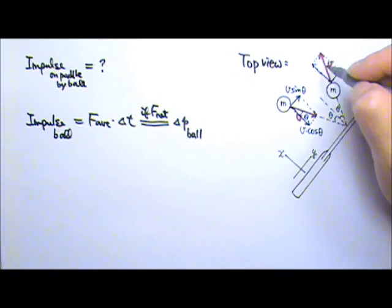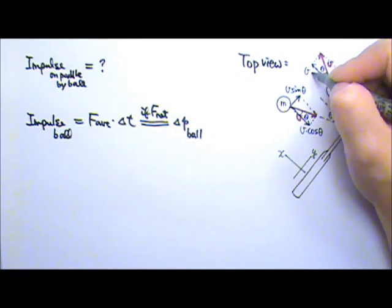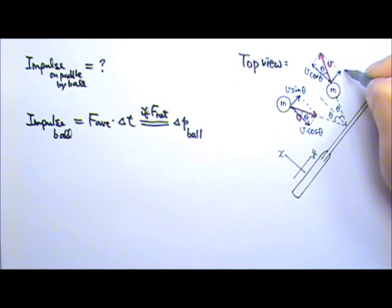That means if this is theta, that one is theta. And this adjacent side is v cosine theta. And that one is v sine theta. V symmetric.